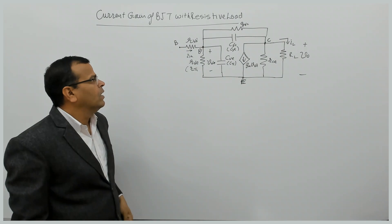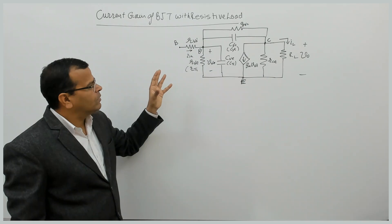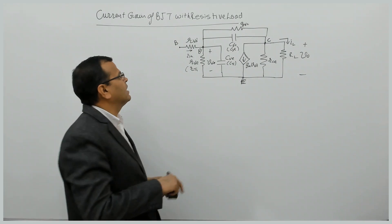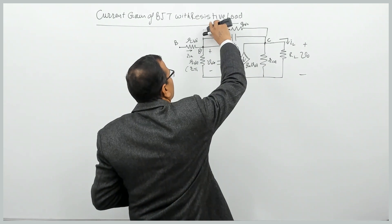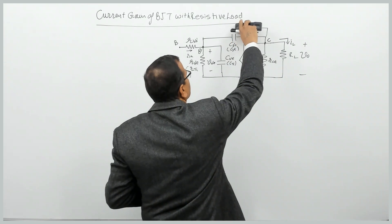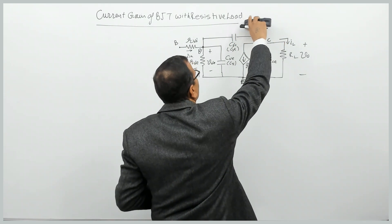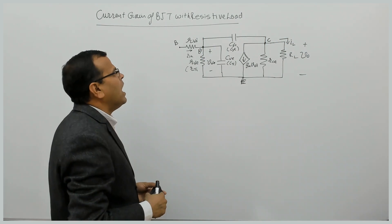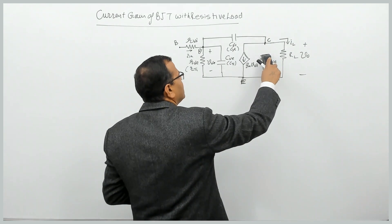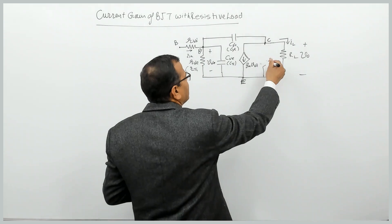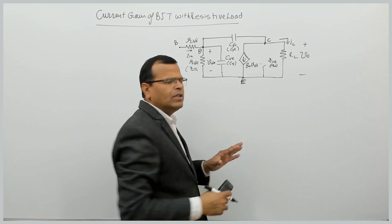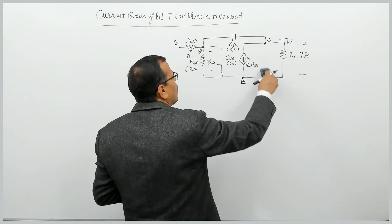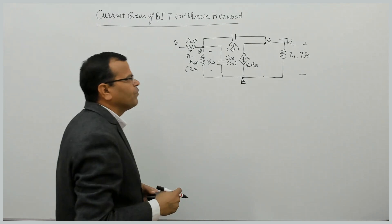In this AC equivalent circuit at high frequencies, we will neglect the conductance — we will not consider it. We will also neglect the resistance on the output side, which is called the output resistance. It is normally assumed to be very large compared to the load resistance, so we will not consider it.